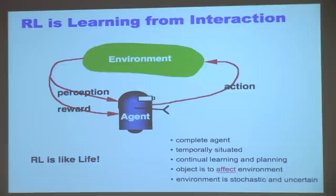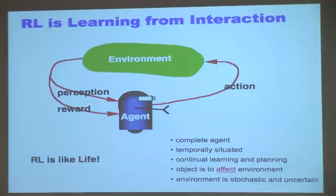Feel free to interrupt at any time — ask questions whenever you want. Here's the abstract diagram we often see. I'll use it to introduce notation. I'm going to be talking about discrete time interaction. At time step T, the state of the environment is S_t. It emits an observation O_t. The agent observes O_t and updates its estimate of the environment state — potentially unseen — then takes action A_t, which generates reward R_t, and the environment transitions stochastically to S_{t+1}. The cycle repeats.